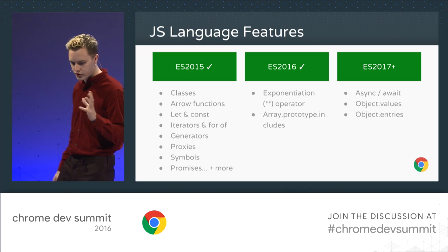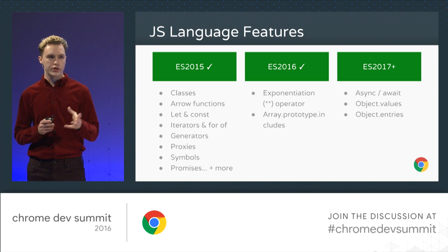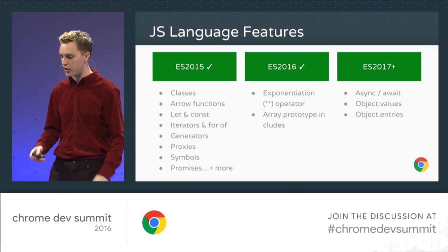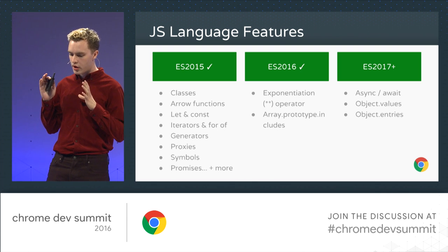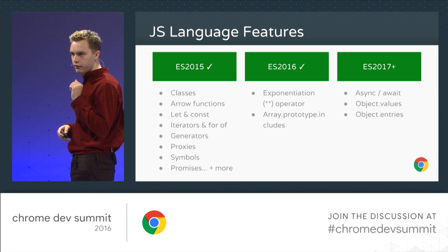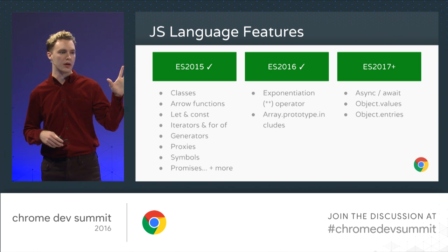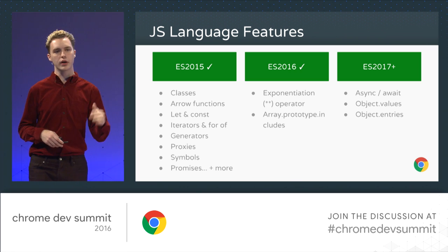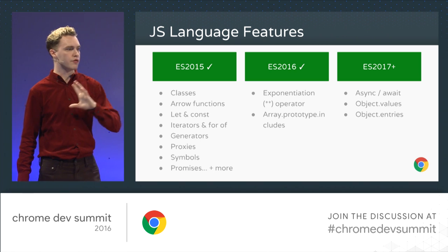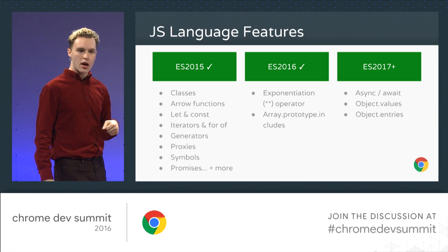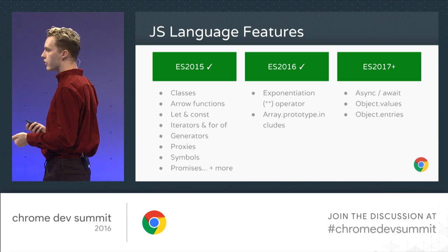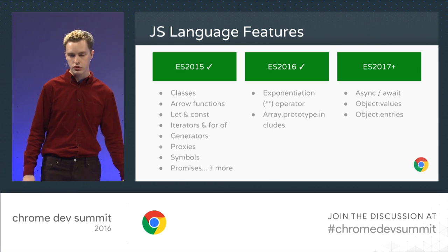V8 supports ES6, ES7, and parts of ES2017 — things not yet fully formalized into an ECMAScript standard. These iterations represented a really large update to the JavaScript language. If you've been using ES5 and below, it's definitely time to look at the powerful and idiomatic features these language updates bring. Looking at the Caniuse compatibility table, a lot of browsers have support for these features, so if you're using Babel or another transpiler, it may be time to consider whether you can turn off transpilation.